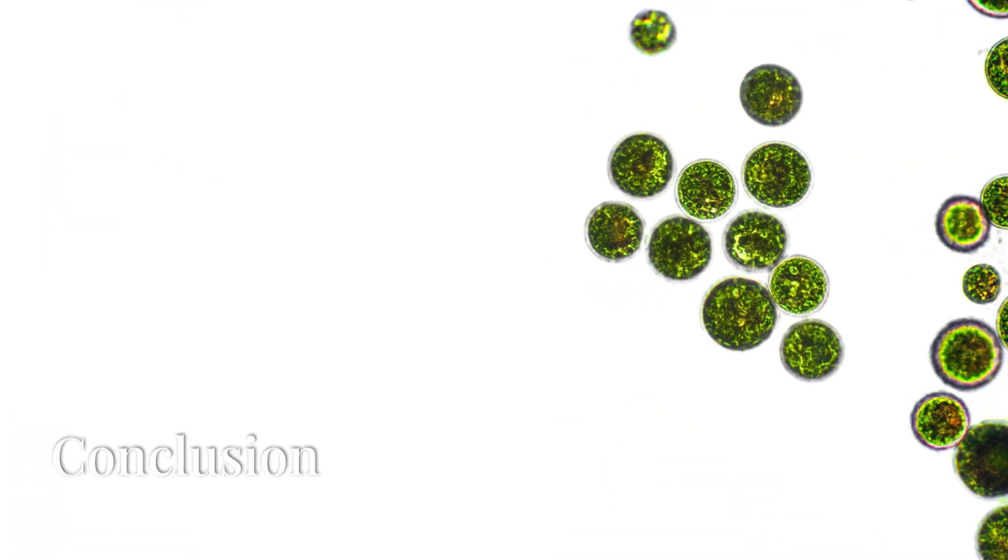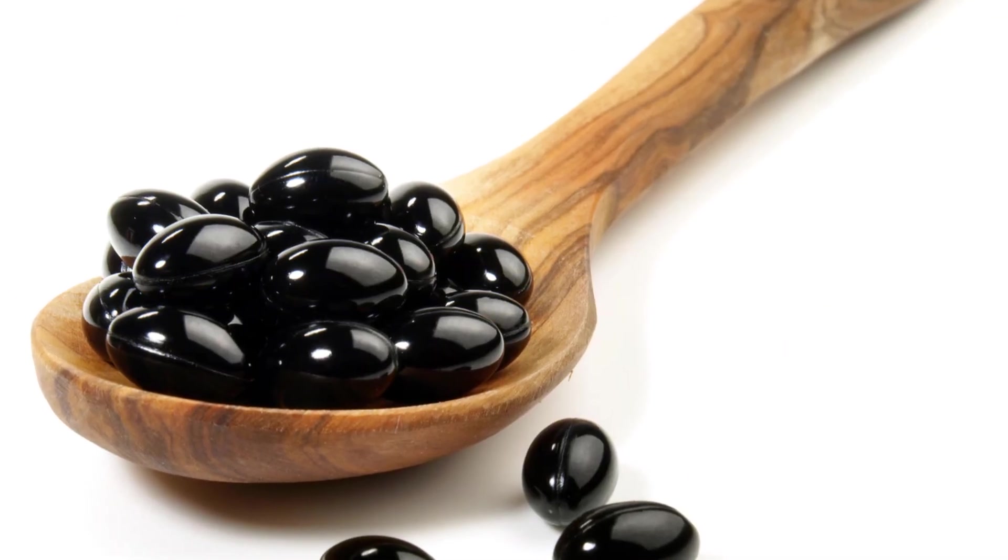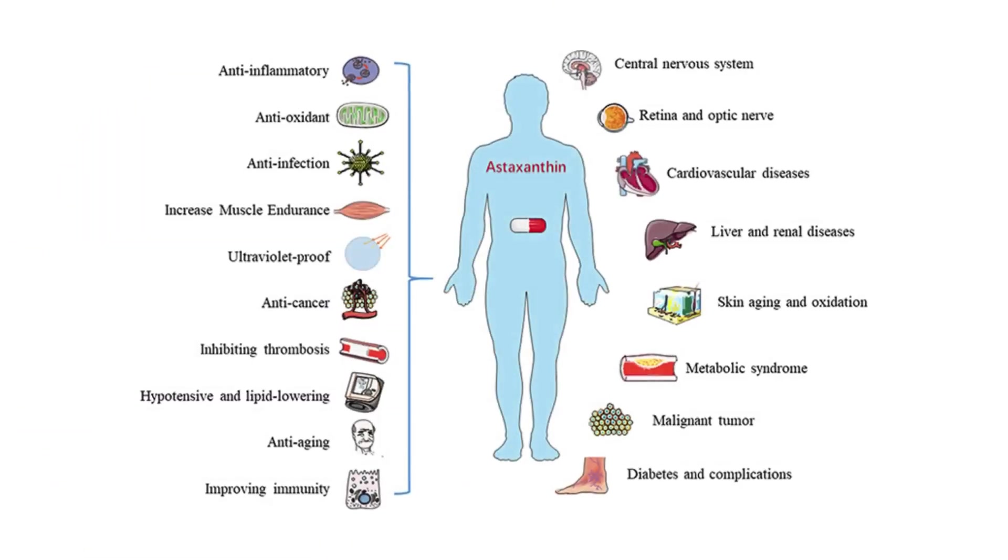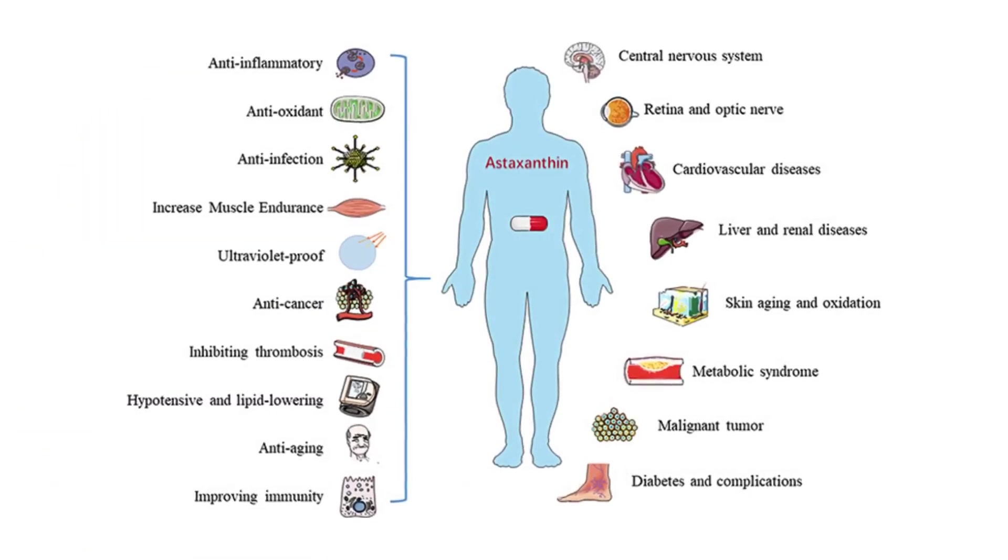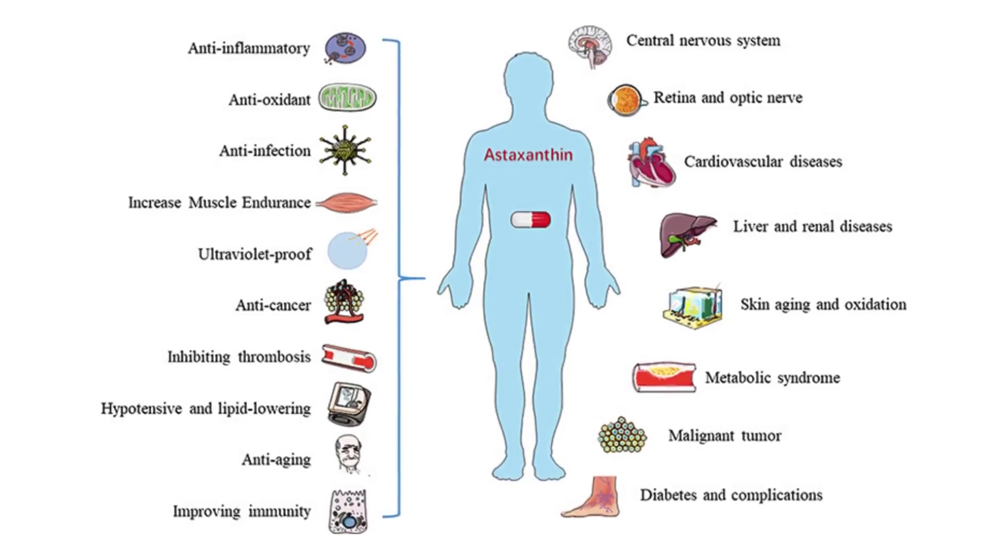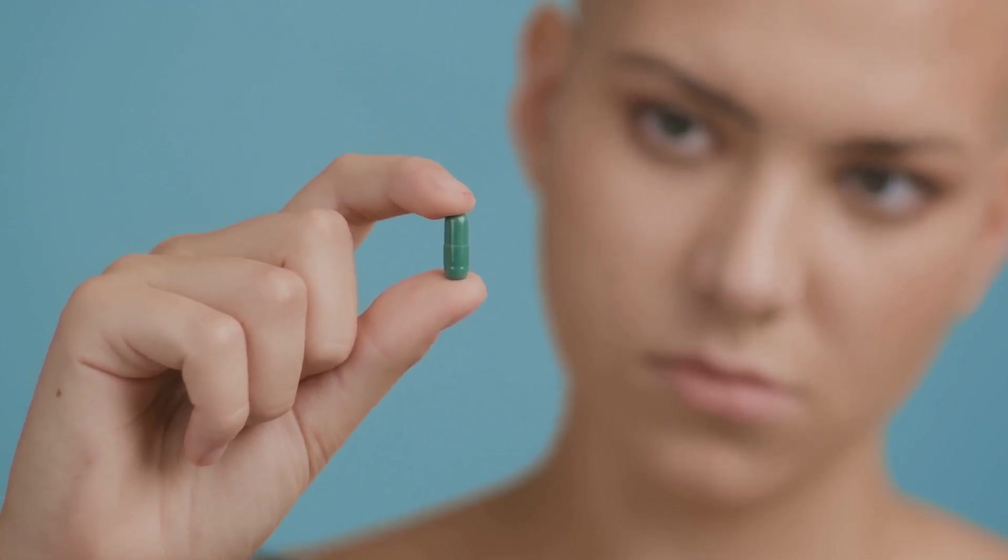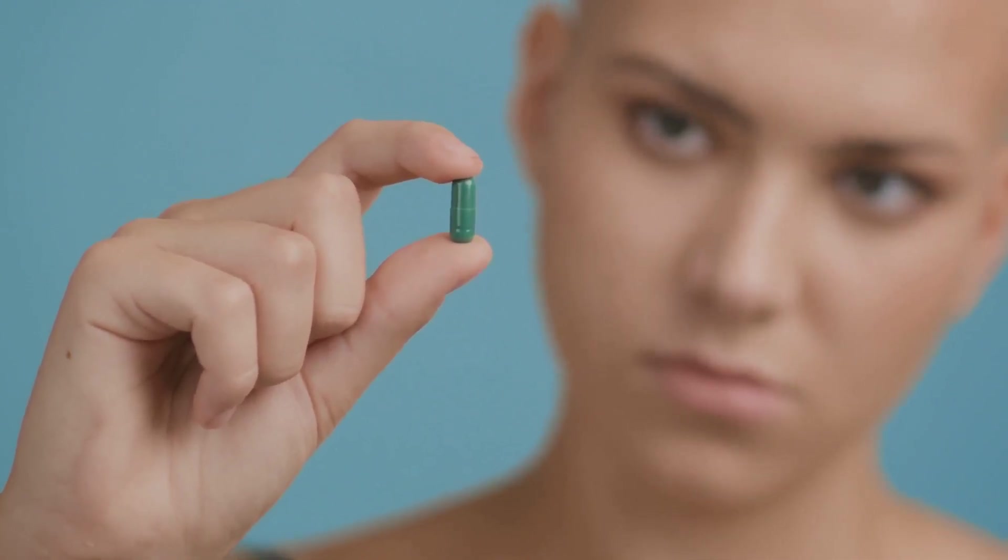Astaxanthin is a potent natural compound with a wide range of health benefits. Its strong antioxidant and anti-inflammatory properties make it beneficial for skin, eyes, cardiovascular system, immune function, muscles, brain, and potentially even in cancer prevention. Whether through natural sources or supplements, incorporating astaxanthin into your diet can support overall health and well-being.